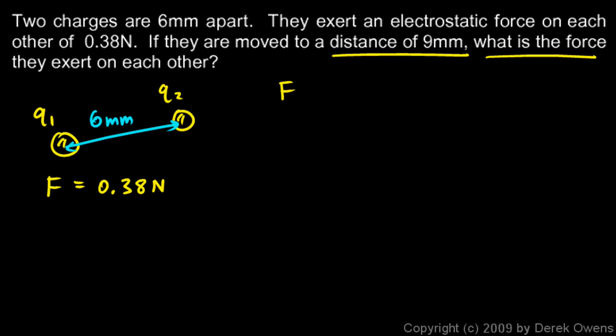Well, the equation, Coulomb's law, F equals k q1 times q2 over r squared, might be helpful. But we don't know q1 and q2. We don't know the magnitudes of the charges. So we can't actually put numbers in and solve this equation.